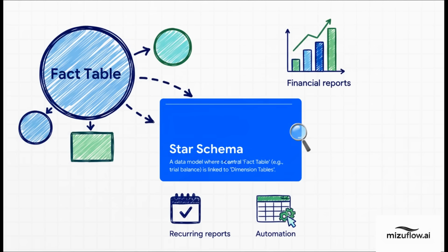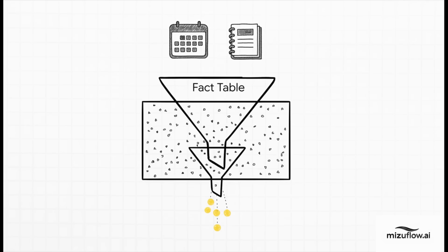Once your data is in that nice long format, we need to organize it using what's called a star schema. It sounds complicated, but the idea is actually super simple. You have a big table in the middle with all your numbers — your trial balance. That's your fact table. Then connected to it, you have smaller tables that describe the who, what, where, when. These are your dimension tables, like your chart of accounts or a calendar table. They give the numbers context. And the dimensions filter the facts — it's that simple.